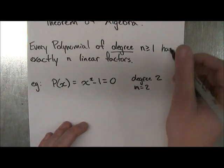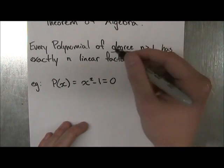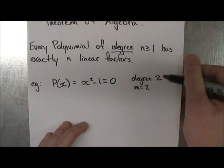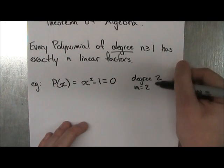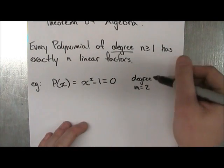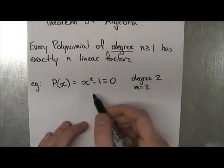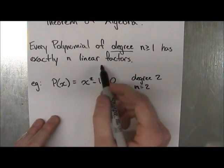And that also means that n is equal to 2. And because n equals 2, if we look at our theorem, it says that a polynomial of degree greater or equal to 1, and we have degree 2, has exactly n, and our n is 2. So this polynomial must have two linear factors.